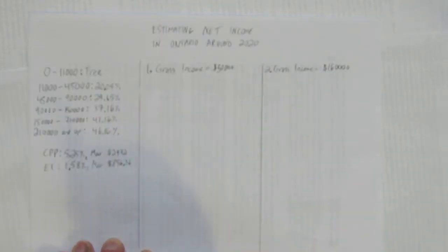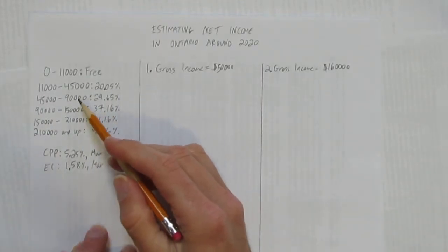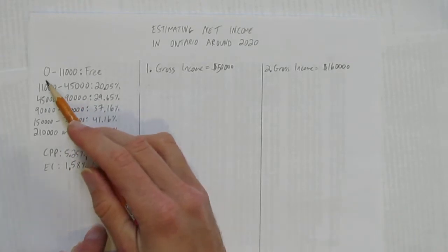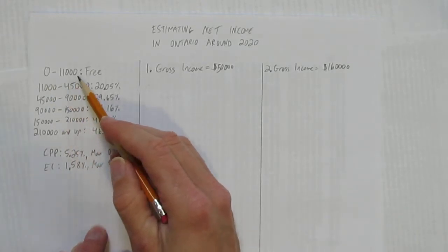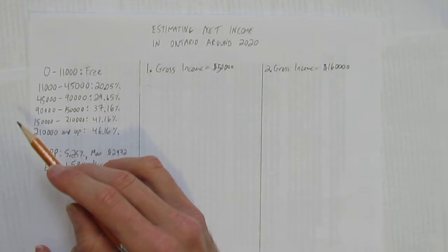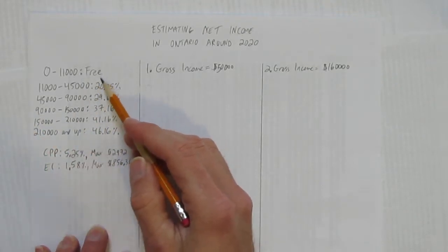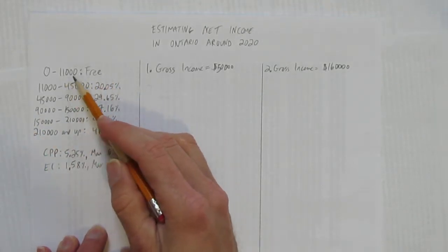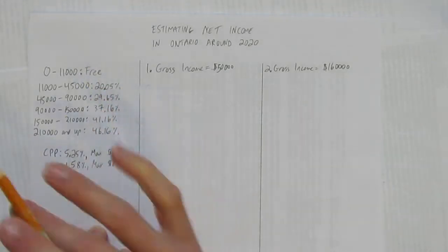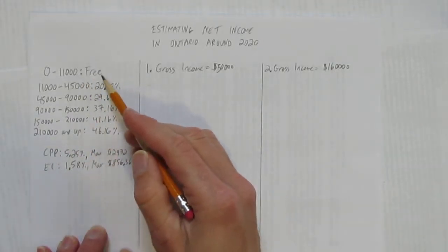So first things first, here's how tax brackets work. Most people don't understand you get $11,000 of income tax-free no matter what, every Canadian, no matter how big or small your salary is, your first $11,000 approximately don't get taxed.